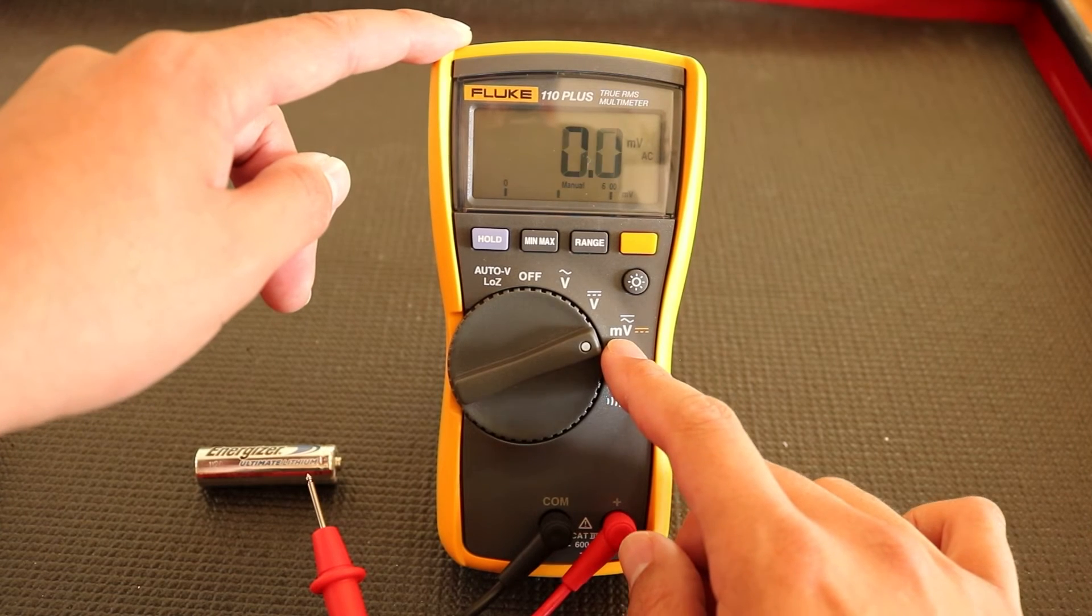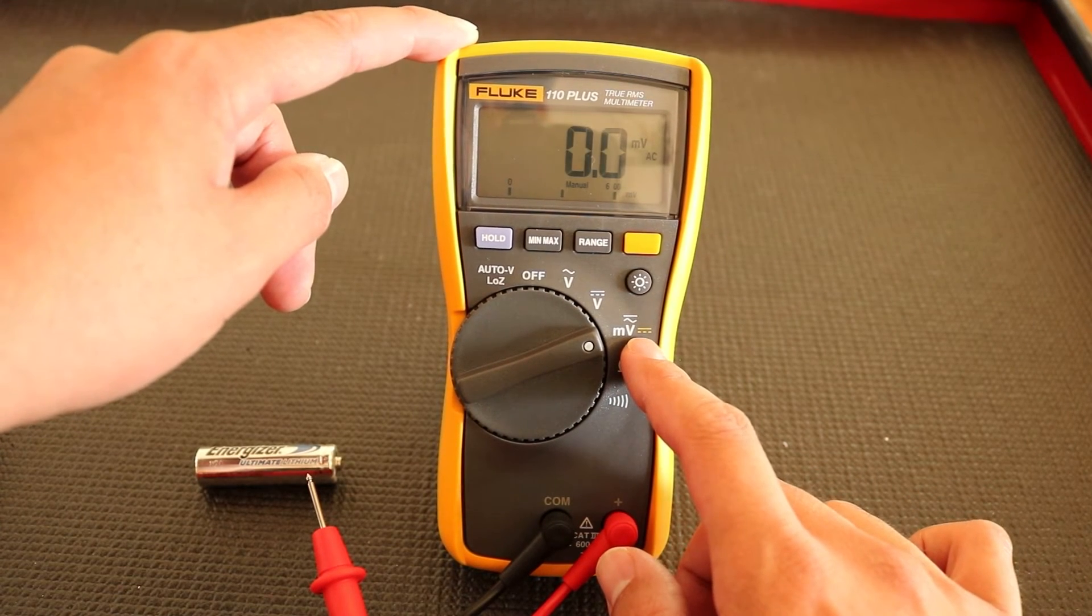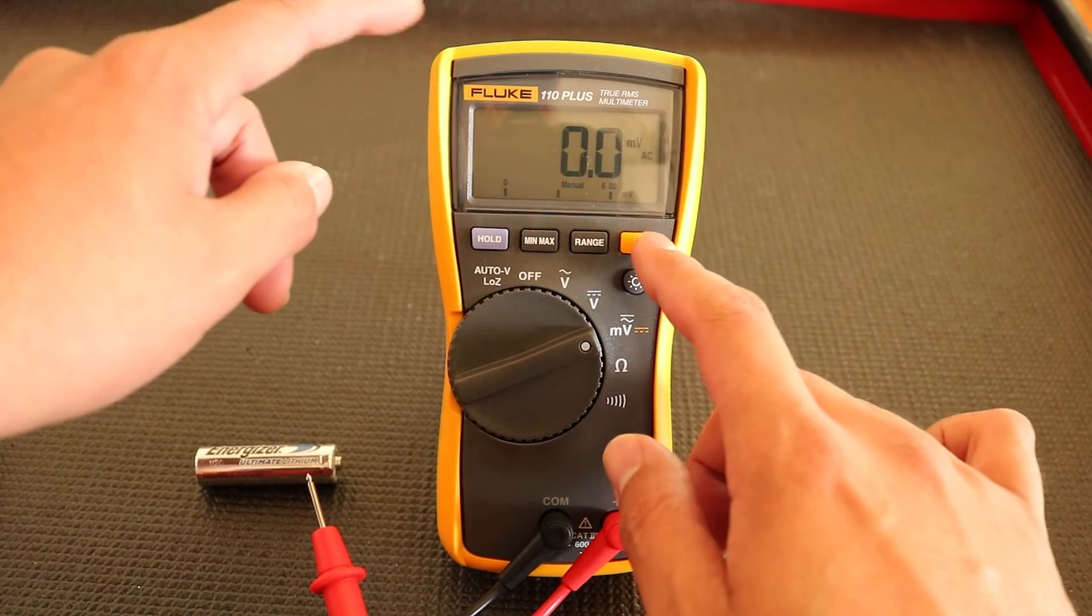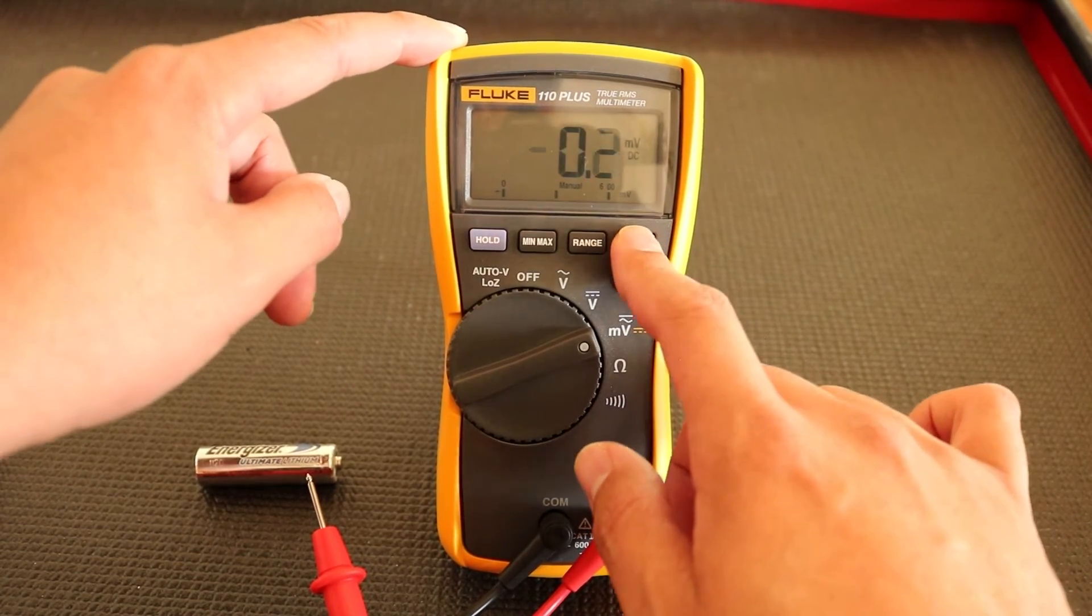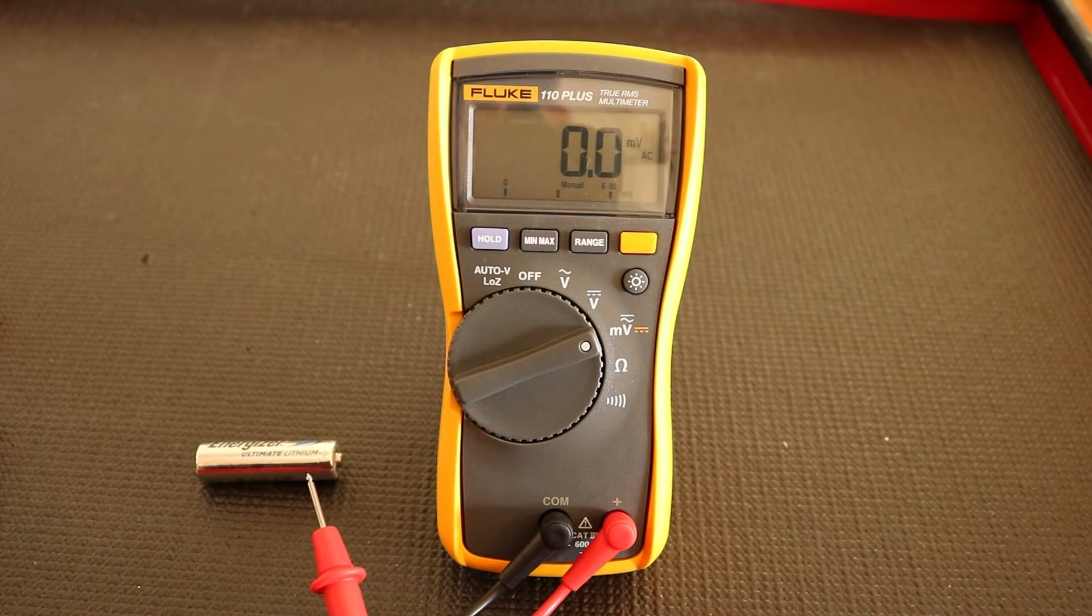Our next setting has two functions. This millivolt setting has an AC symbol in white, but here in yellow it has a DC symbol. The way that you toggle through that is by pressing the function button.